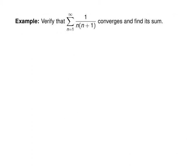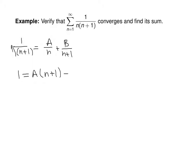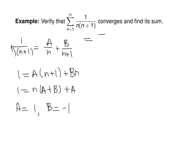The other series you had examples of other than geometric series were telescoping series. For this series we're going to find the partial fraction decomposition of 1 over n times n plus 1. So 1 over n times n plus 1 equals A over n plus B over n plus 1. Multiplying by n times n plus 1: 1 equals A times n plus 1 plus Bn, giving A equal to 1 and B equal to negative 1. So my series is the sum from n equals 1 to infinity of 1 over n minus 1 over n plus 1.